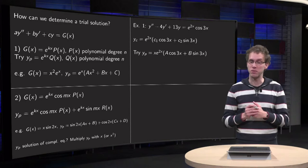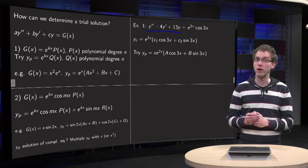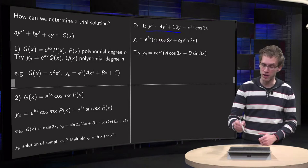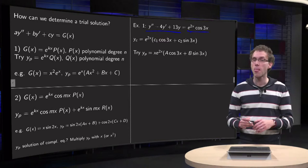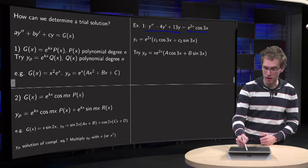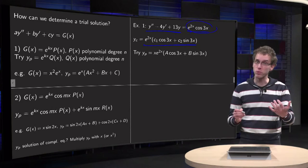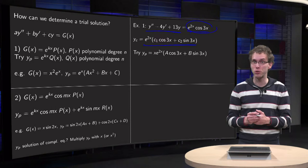Let's do an example to see what happens. For example, if we have this equation y double prime minus 4y prime plus 13y equals this right-hand side, you can compute the solution of the complementary equation and that happens to be exactly this right-hand side.